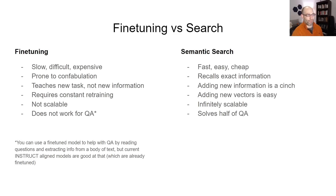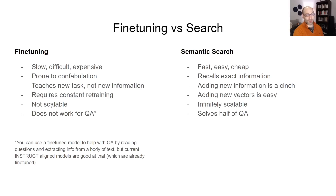Let's do a side-by-side of fine-tuning versus semantic search. Fine-tuning is slow, difficult, and expensive. Semantic search is fast, easy, and cheap. Fine-tuning is prone to confabulation; semantic search recalls exact information. Fine-tuning just teaches a new task, not new information, whereas with semantic search it is very easy to add new information to your database or index. Fine-tuning requires constant retraining whenever you add a new document — you need to retrain the entire model — which is very expensive. With semantic search, adding new elements is very easy. Fine-tuning is not scalable; the cost goes up proportional to the amount of data. Semantic search — tools like Facebook AI's FAISS — scale to a trillion elements.